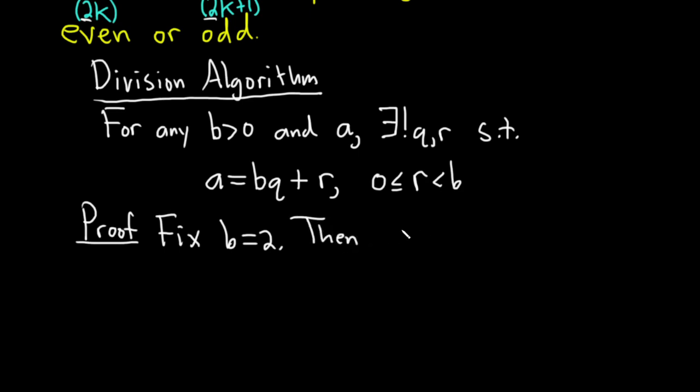Then for any integer, and I'm going to use a different letter, I'm going to use n. So n is going to take the place of our a here in the division algorithm. So there exists unique q and r, and again, everything here is an integer such that